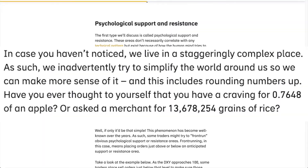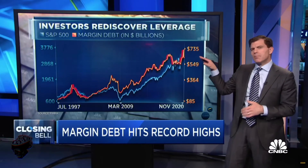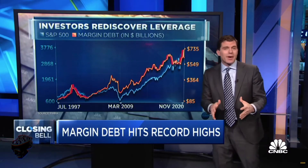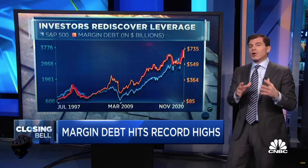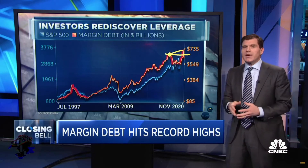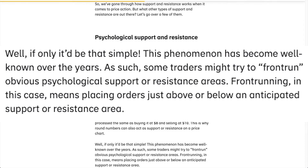A similar effect is at play in the financial markets. It's especially true for cryptocurrency, which involves easily divisible digital units. Buying an asset at $8.674 cents and selling it at $9.9765 just isn't processed the same as buying it at $8 and selling it at $10. This is why round numbers can also act as support and/or resistance on a price chart.